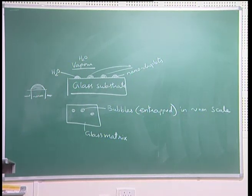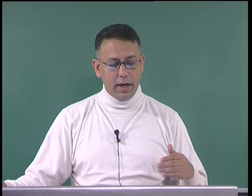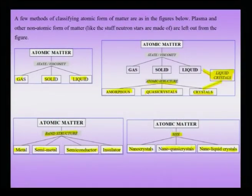Let me summarize this slide. A phase — here we are restricting ourselves to phases made of atomic species, and when I mean atomic species I am talking about atoms, ions, molecules, clusters of atoms, etcetera — these atomic species can form phases defined based on a geometrical entity or a physical property. Atomic matter can be classified in various ways and all these classifications are important especially when we are talking about addressing the important questions: what is nano in a nanostructure, or what is nano in a nanomaterial, or what is so important about nano.